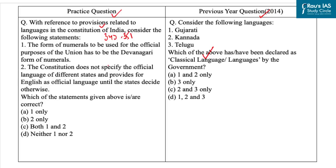Part 17 of the Constitution deals with the official language in Articles 343 to 355. Its provisions are divided into four heads: language of the union, regional languages, language of the judiciary, and texts of laws and special directives.